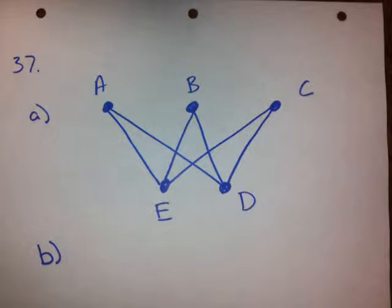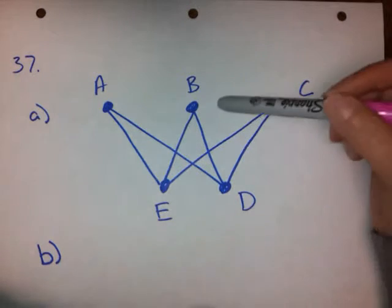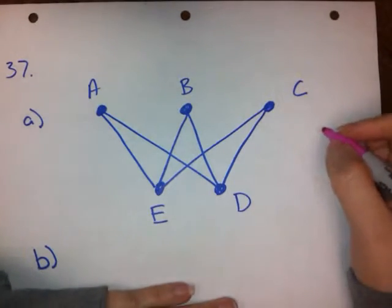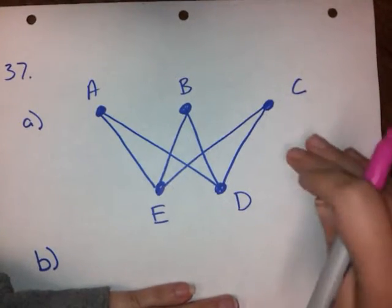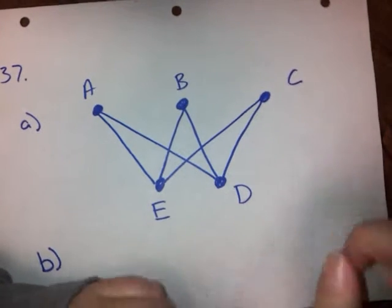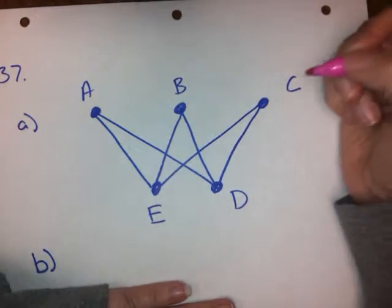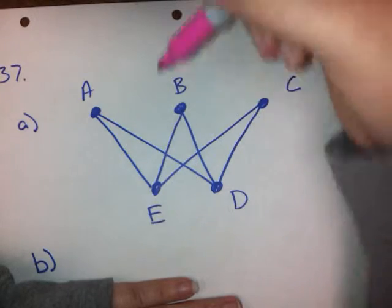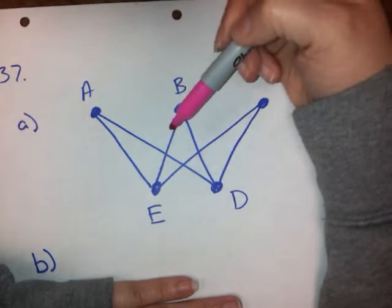And then to determine the number of Hamilton circuits for the modified graph. So we need to take this graph and make it a complete graph. If you remember the rule, a complete graph has edges from every vertex to every other vertex. So any possible edge is there.